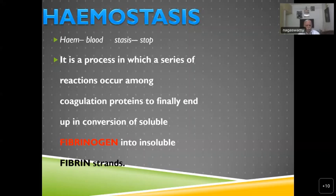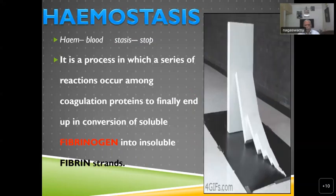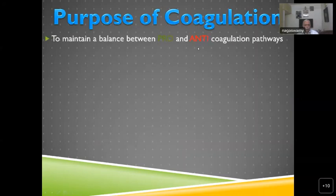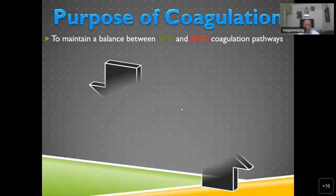This is the actual definition of coagulation. You want ultimately the fibrinogen, which is a protein dissolved in the blood, to become insoluble fibrin strands. The purpose of coagulation is to maintain a balance between pro- and anti-coagulation processes. Otherwise all of us will be having a traumatic lesion somewhere. In a normal healthy vascular tree, no thrombus should form when blood is flowing.